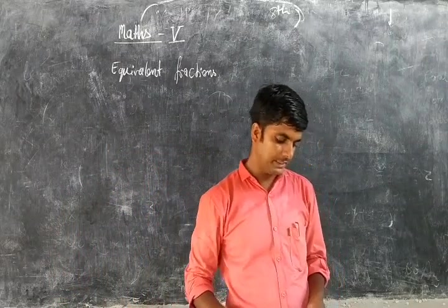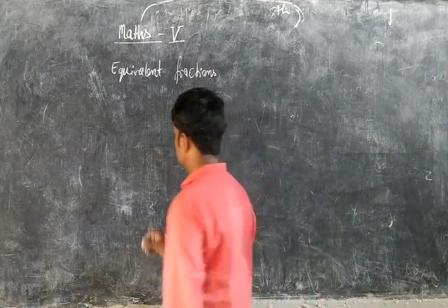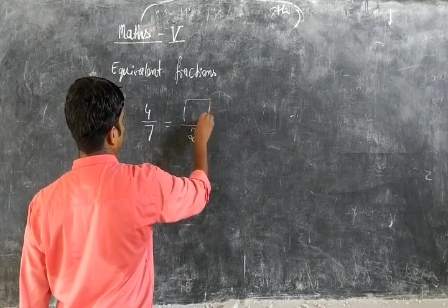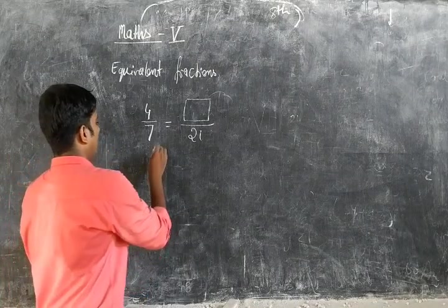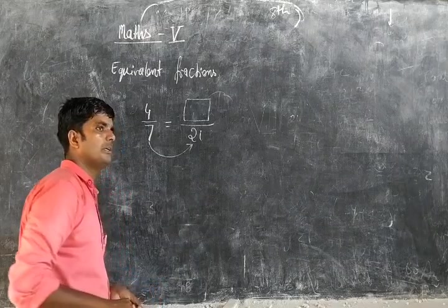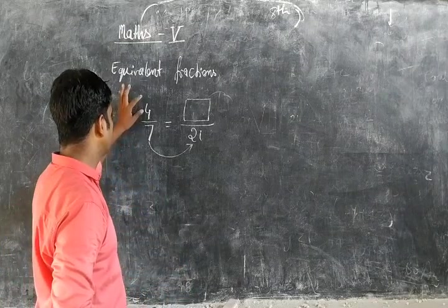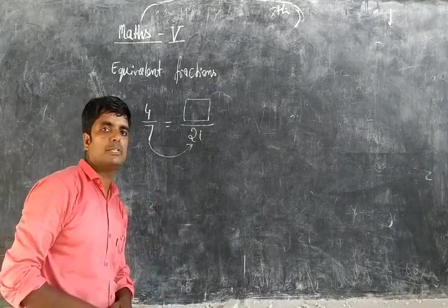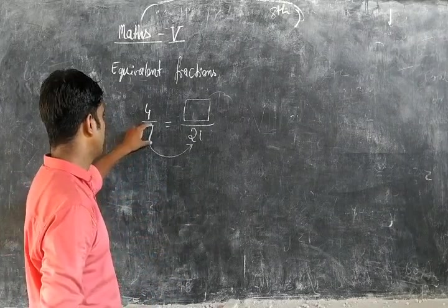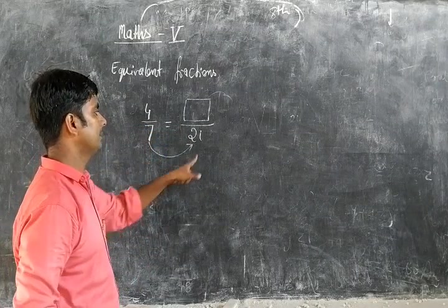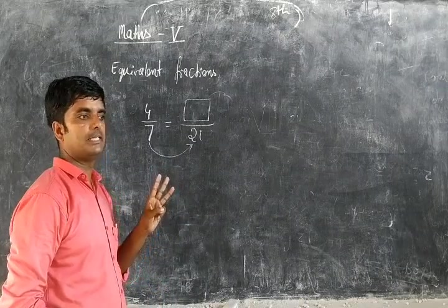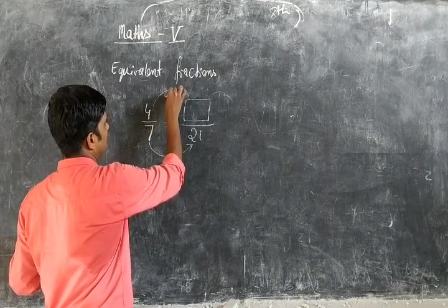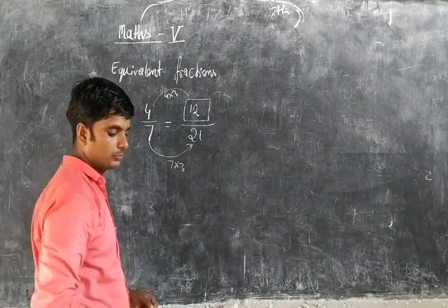If you have a question like 4 by 7 equals blank by 21, how can 7 become 21? Because the denominator is 7 and it needs to become 21. So 21 divided by 7 equals 3, meaning 7 is multiplied by 3. So when 7 is multiplied by 3, the numerator must also be multiplied by 3: 4 multiplied by 3 equals 12. So the answer is 12.